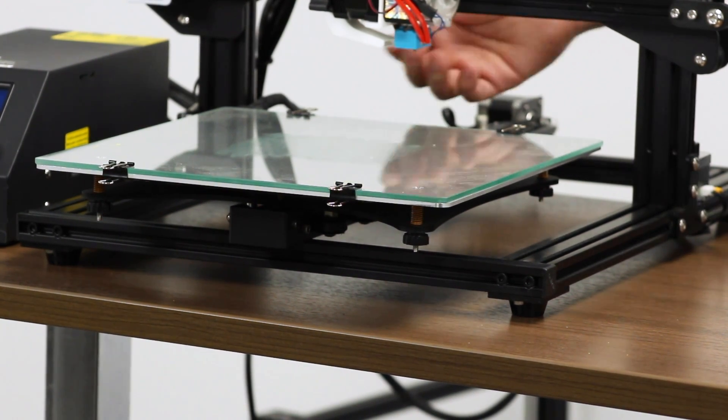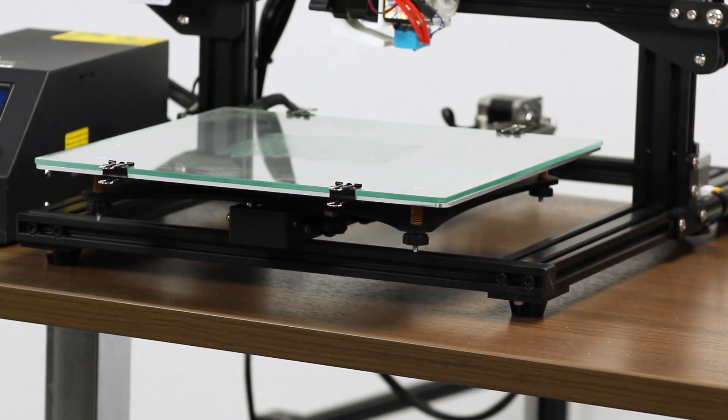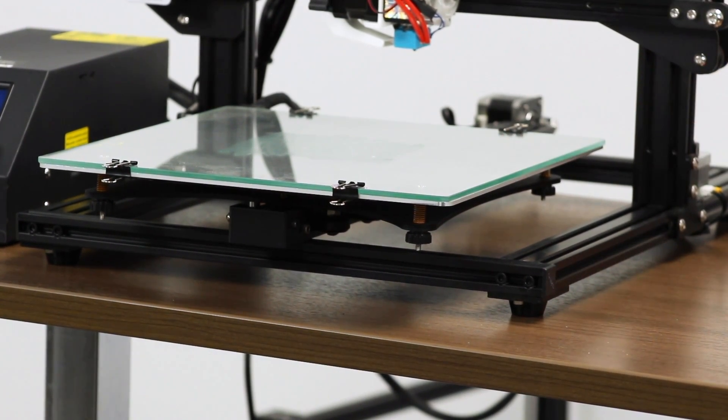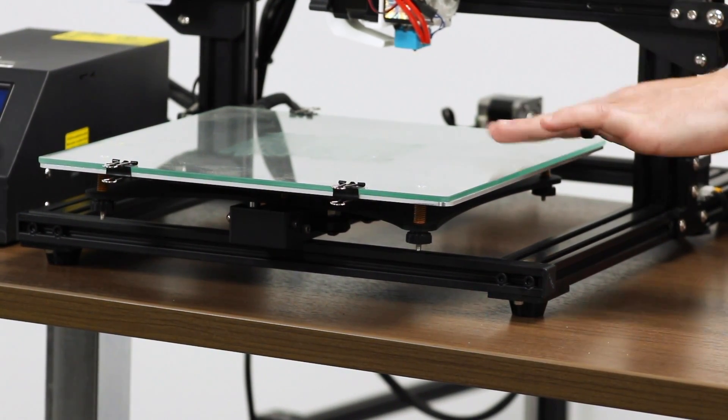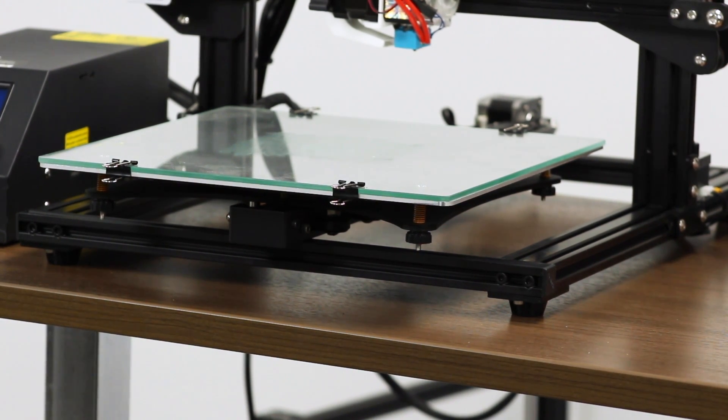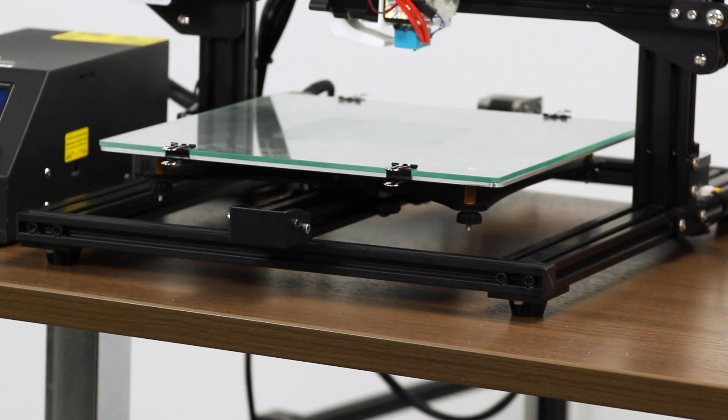Other than that, there's no build surface. So the build surface is just glass. Some people like that. You could put your bonding agent, whether it be glue stick or whatever, on top of that if you feel the need. Or you could always laminate another build-tack type surface on top of that. But this is something that we've also seen for a long time.